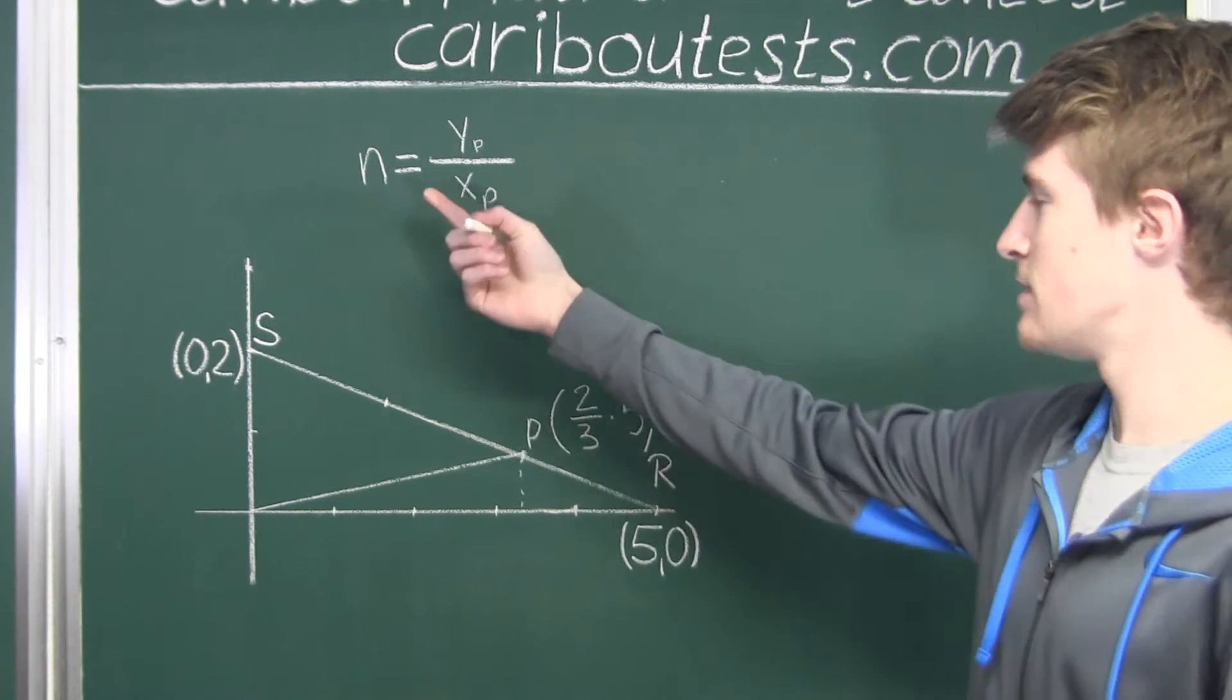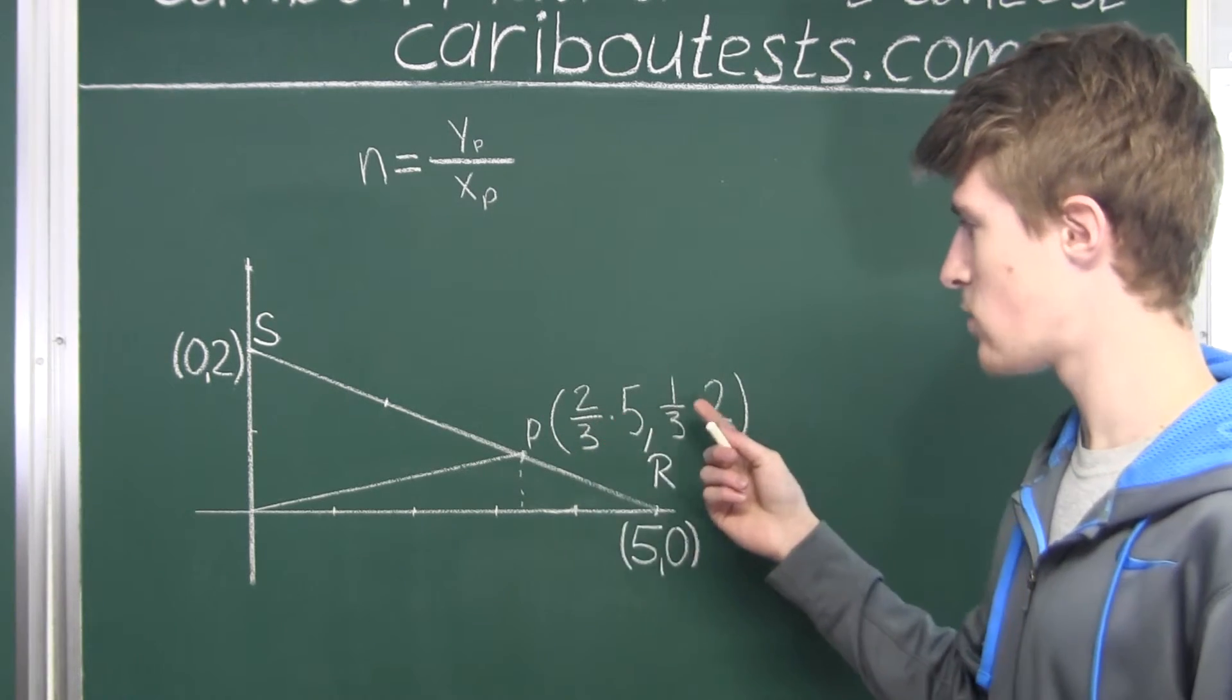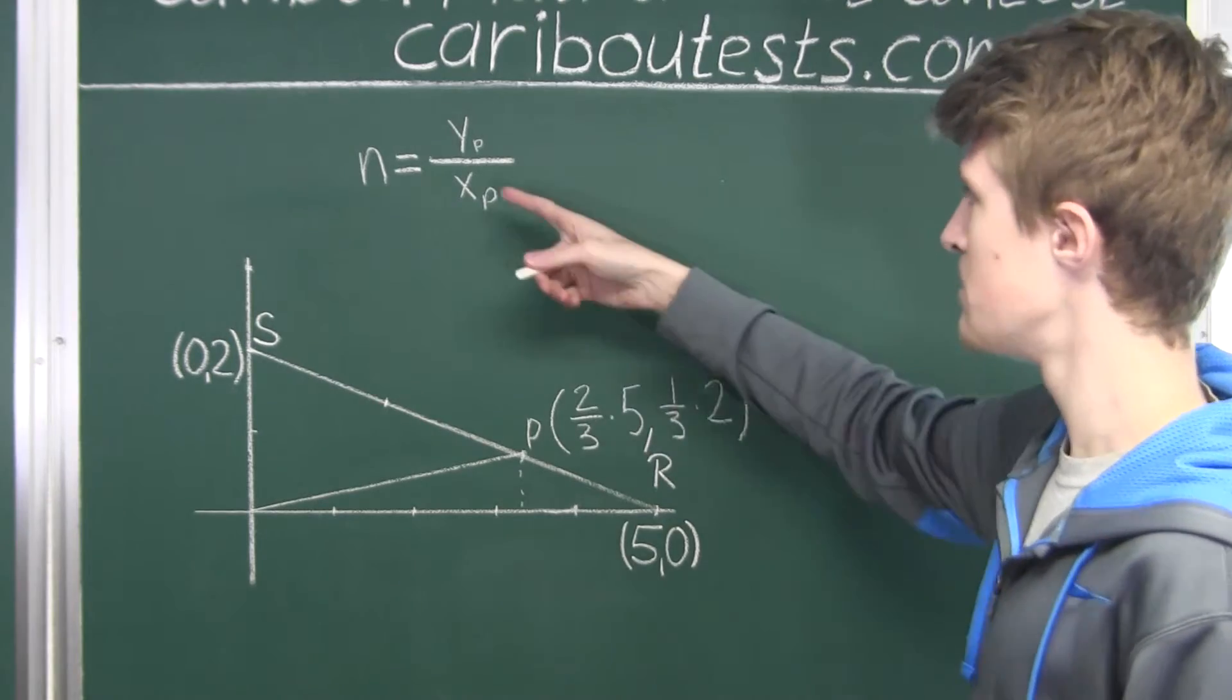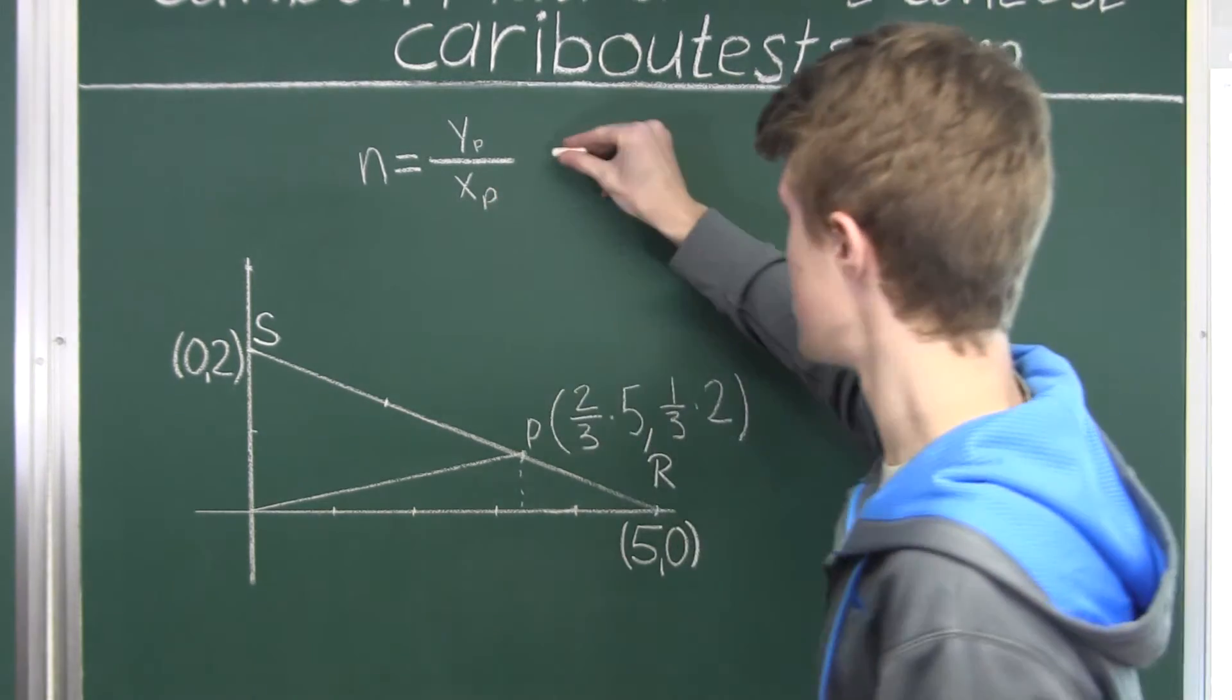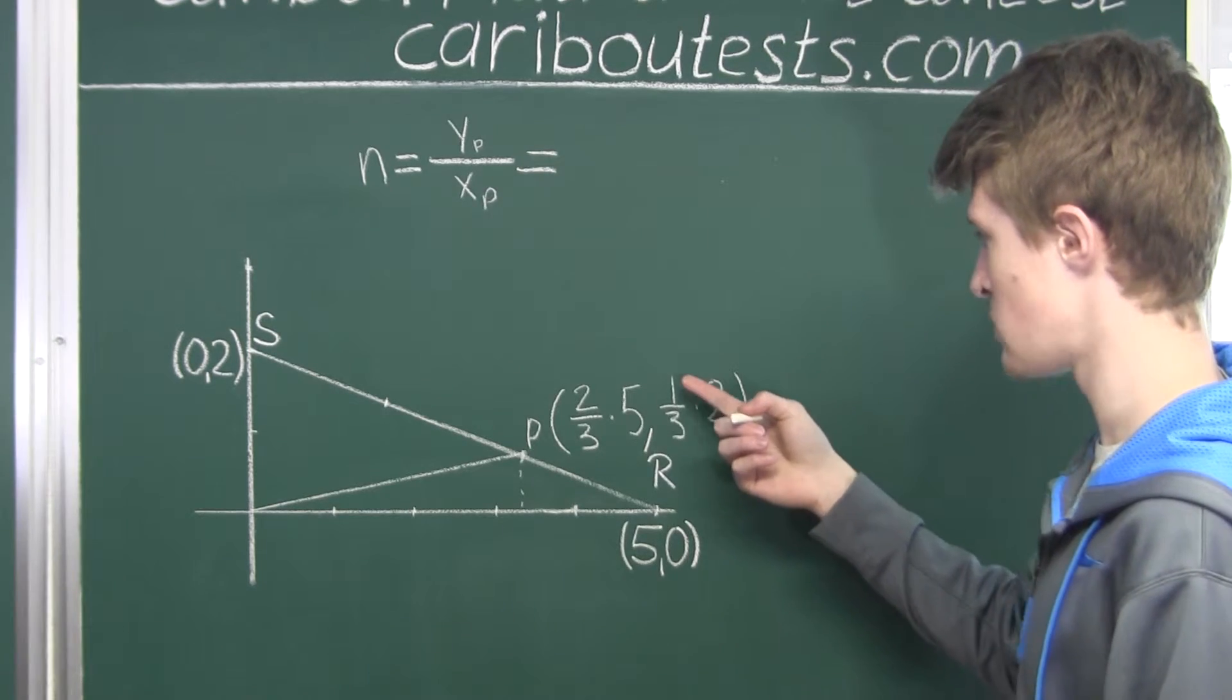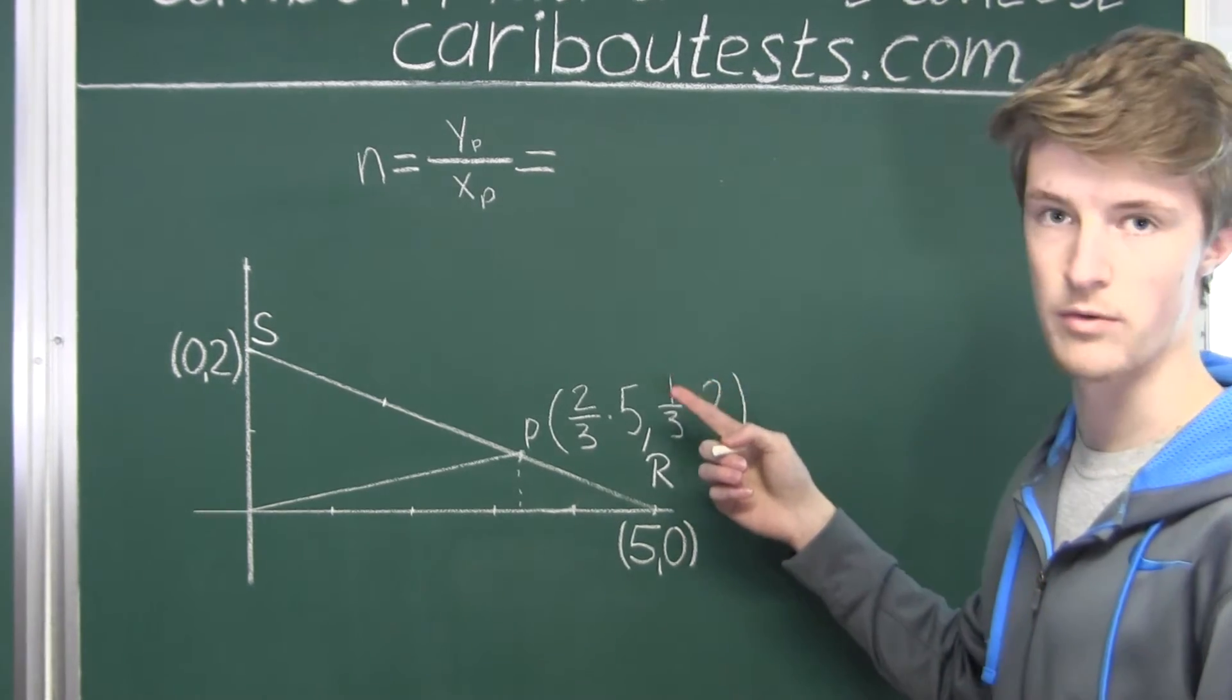Okay, so now we have the X and the Y coordinates of point P. So now let's divide the Y coordinate of P by the X coordinate. Well, for the Y, it's just 2 times 1 over 3, so we'll just have 2 over 3.